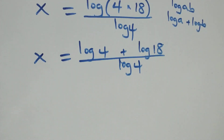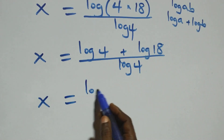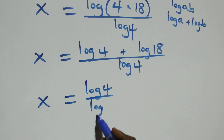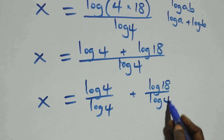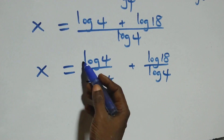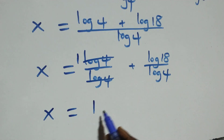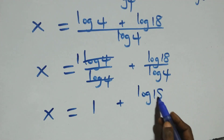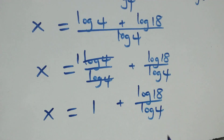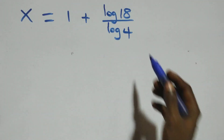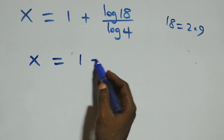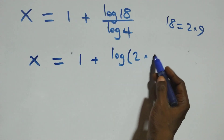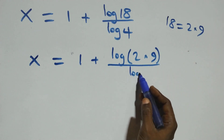Then next step here, we have x equals to log 4 over log 4 plus log 18 over log 4. Next step here, we can write 18 as 2 times 9. And what we have becomes x equals to 1 plus log of 2 times 9 over log 4.